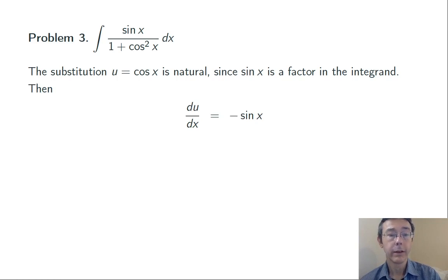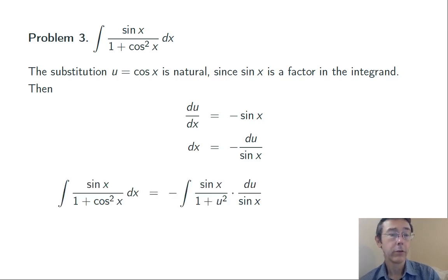If u is cosine of x, then du dx is negative sine x, and dx is negative du over sine x. Plugging back into the original integral, that sine x over 1 plus cosine squared x dx becomes negative sine x over 1 plus u squared times du over sine x. And then of course those sine x's are going to cancel as we expected.